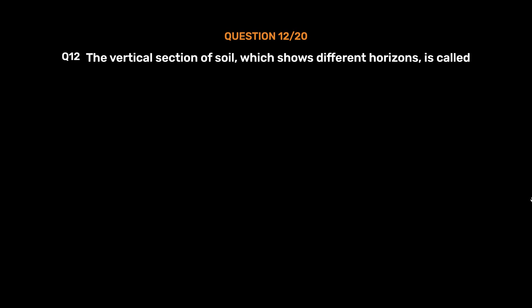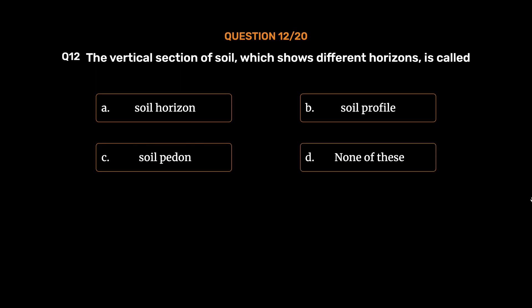Question number 12. The vertical section of soil which shows different horizons is called: option A, Soil horizon; option B, Soil profile; option C, Soil pedon; option D, None of these. The correct answer is option B, Soil profile.